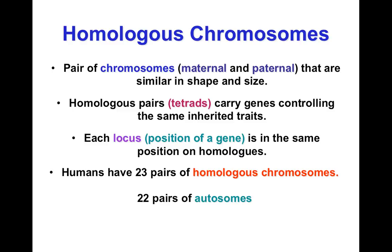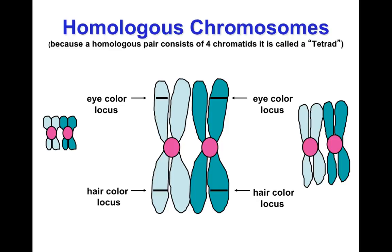When we do meiosis, we'll actually have two pairs of homologous chromosomes, and they'll make something called a tetrad. Some other terminology we need to know is something called the locus, or loci, and this is one specific point on the chromosome.